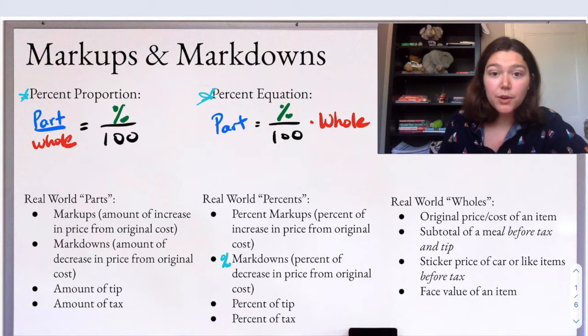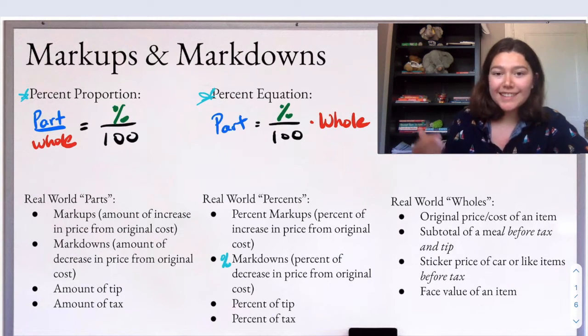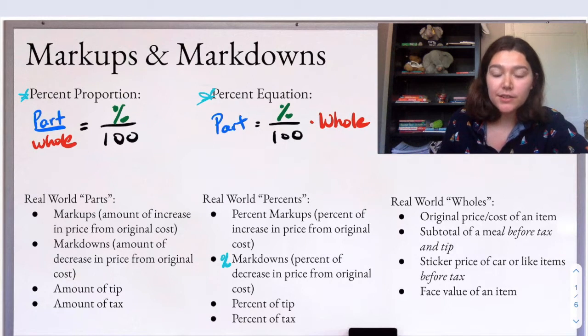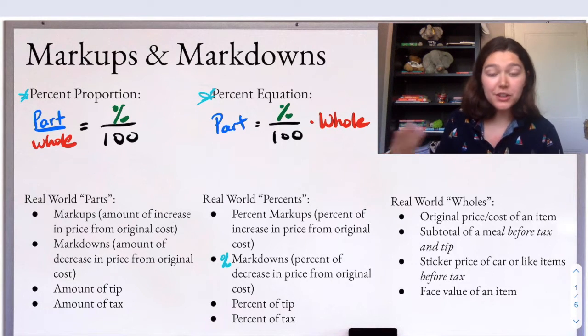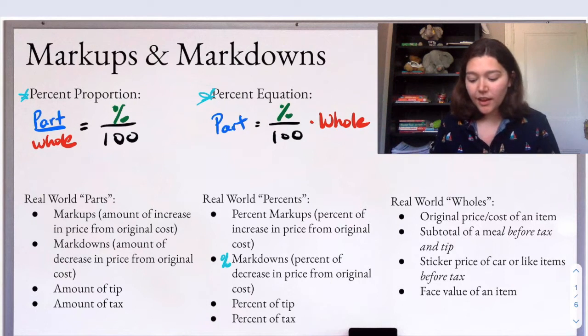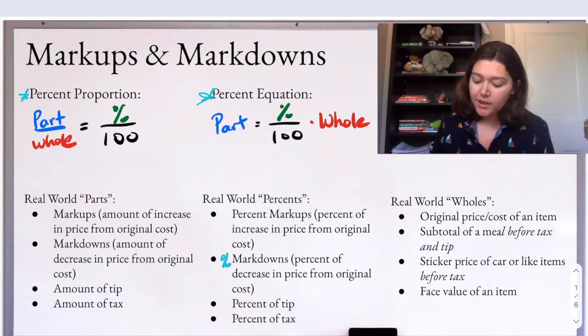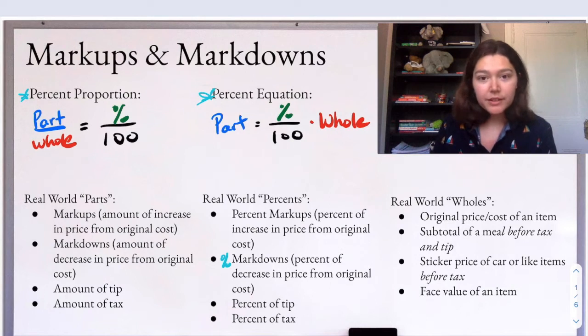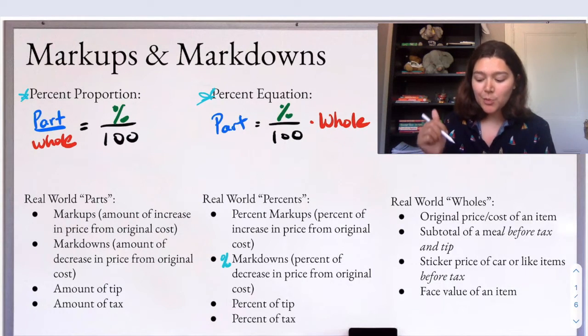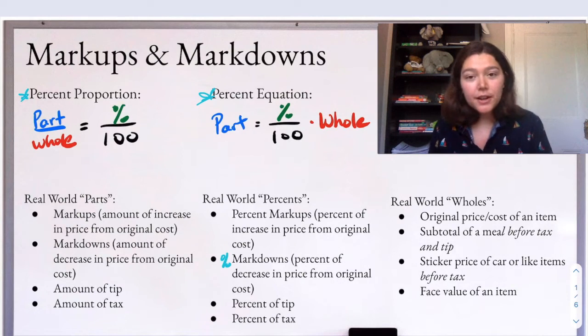And then finally, we have some real world wholes. So generally in these questions for markup and markdowns, I want you to think of wholes as the original price, the original cost of an item. And then we're going to be marking things up and marking things down, but it's the original price that we're going to consider our whole. So examples more specifically is the subtotal of a meal, so the cost of the food before you add tax, before you add tip. It could be the sticker price of a car.